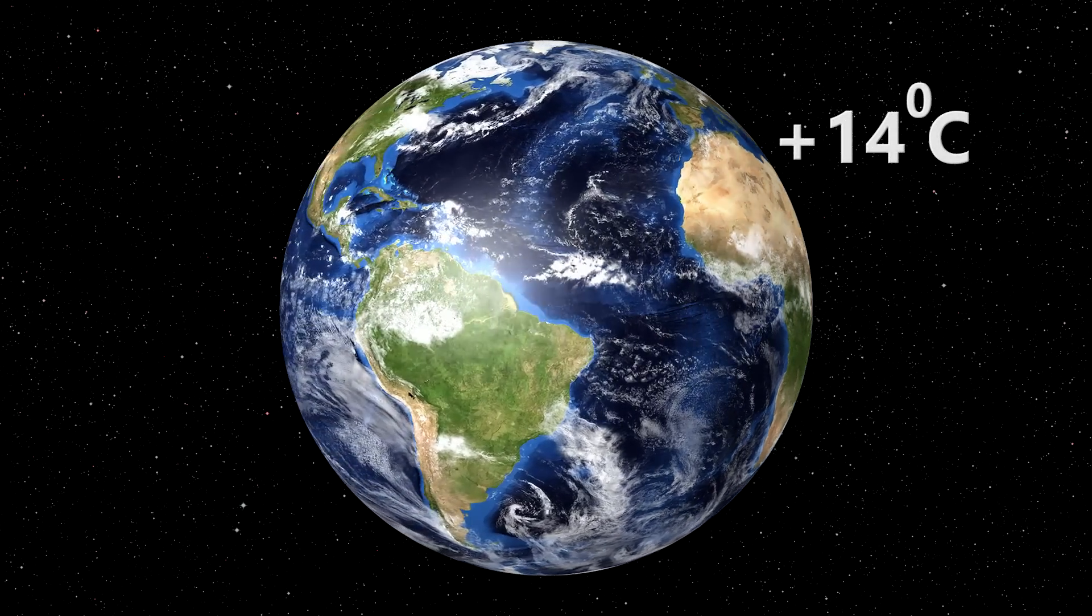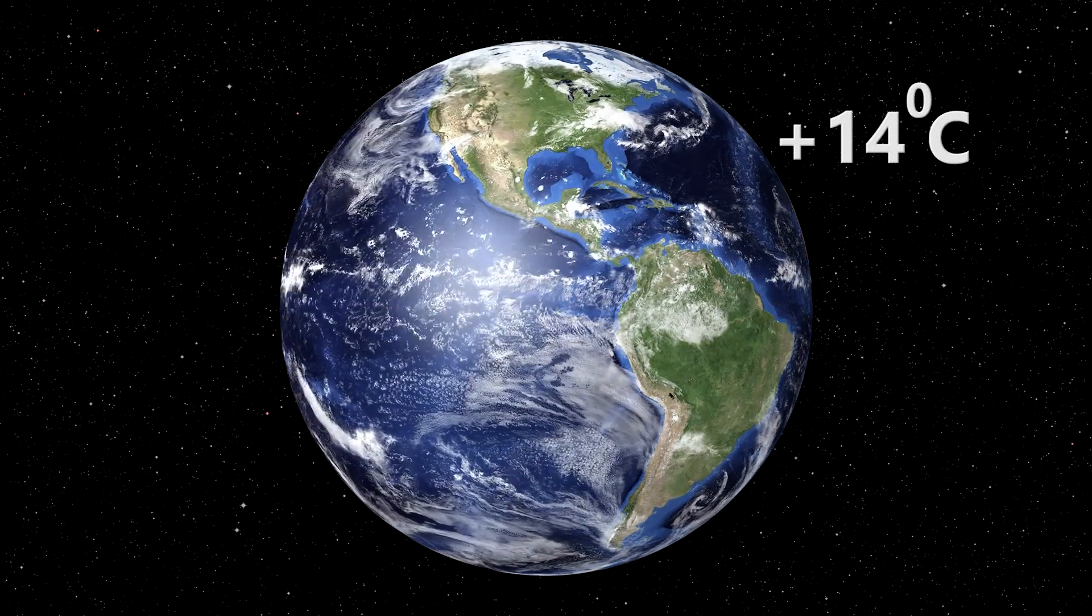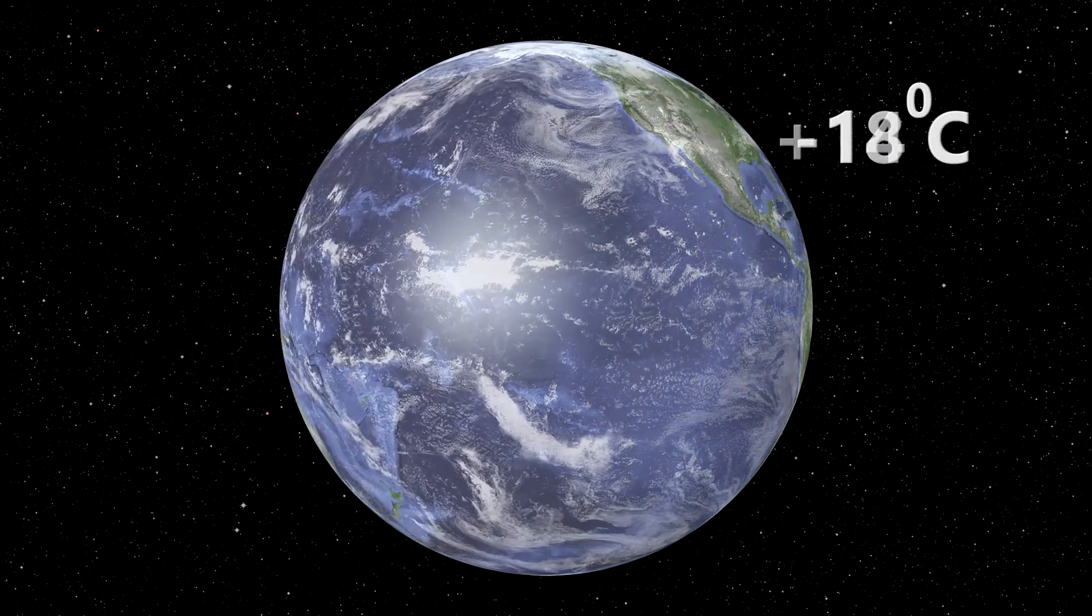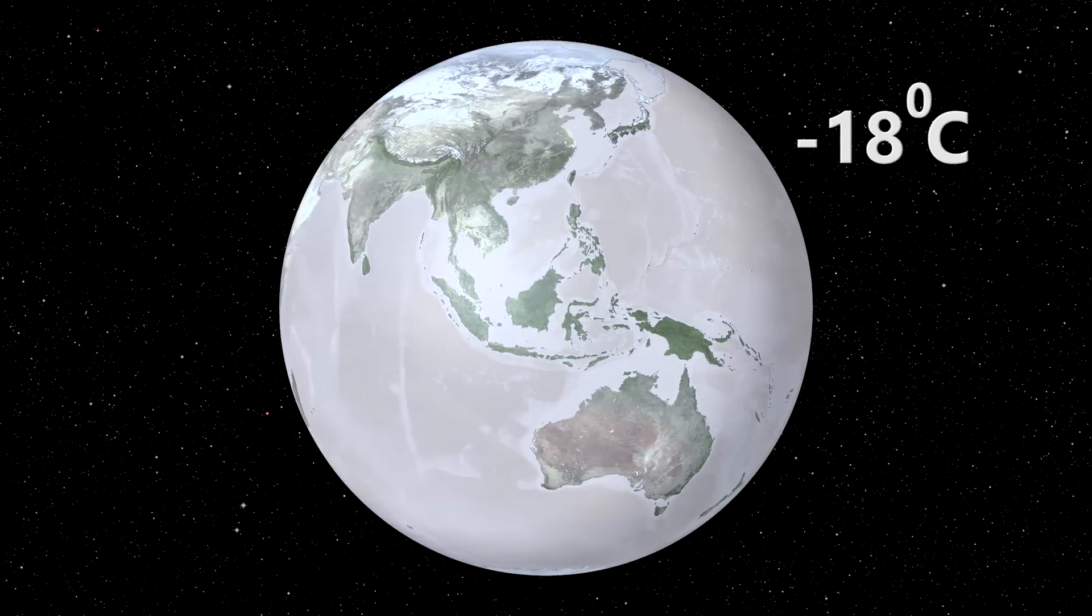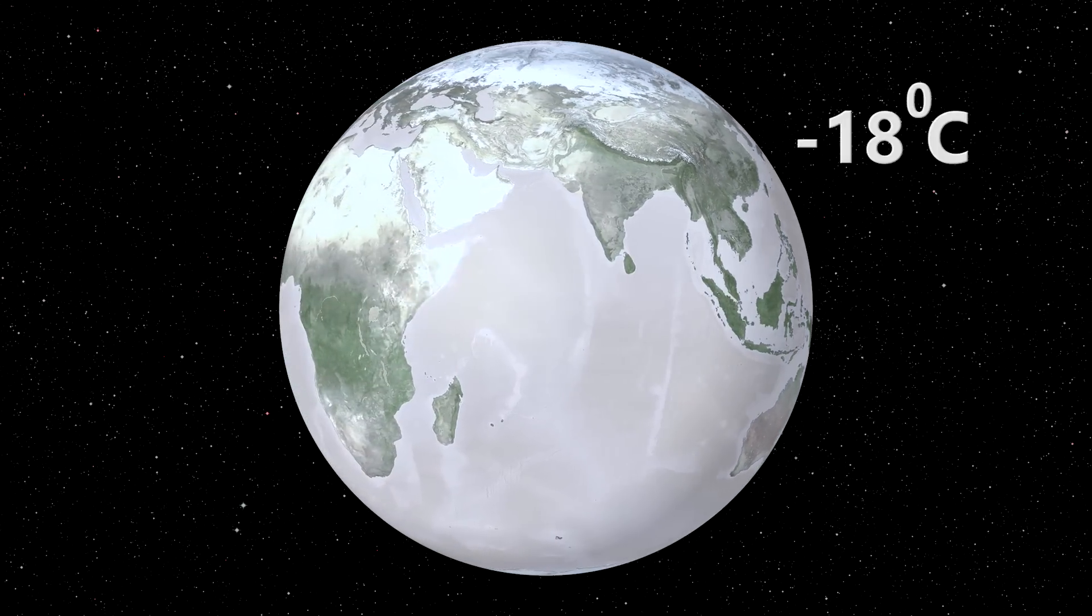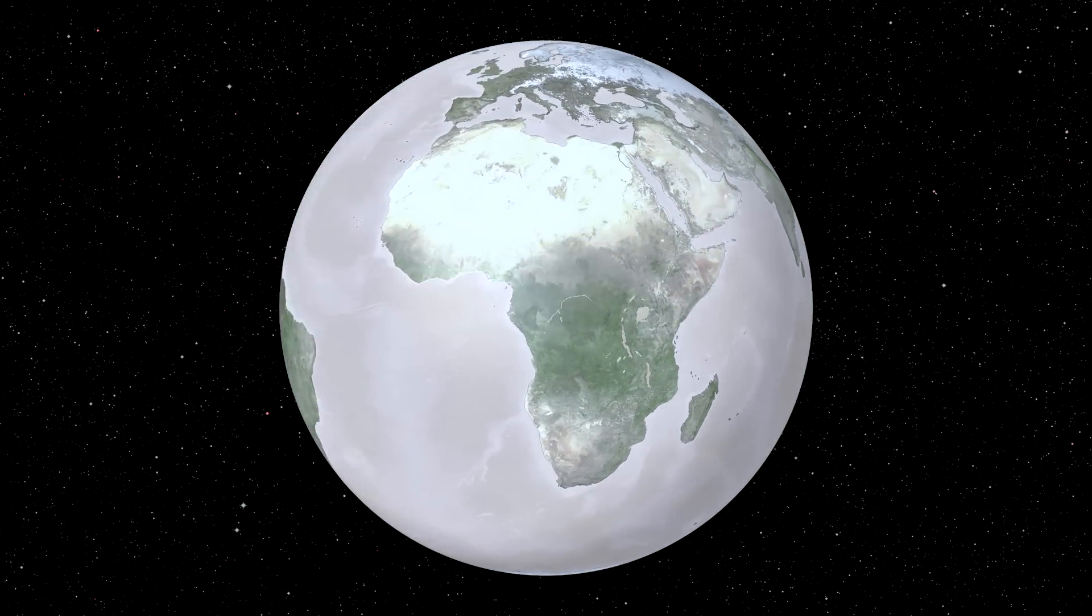The average surface temperature of Earth is plus 14 degrees Celsius. Can you imagine an Earth with an average surface temperature of minus 18 degrees Celsius instead of the present plus 14 degrees? An Earth full of ice without any flowing water bodies.